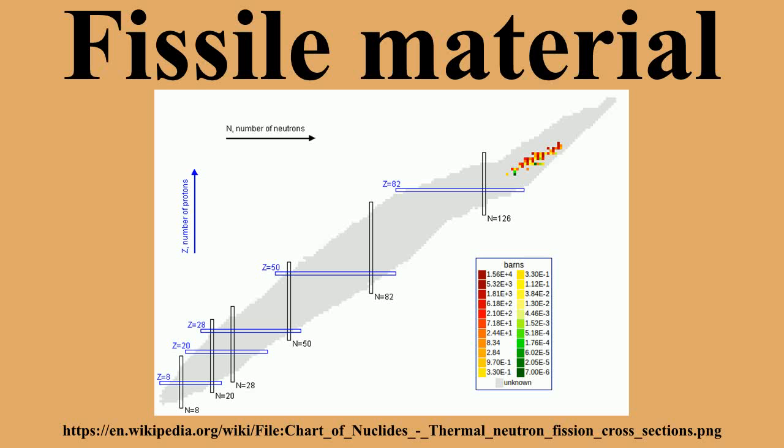By definition, fissile material can sustain a chain reaction with neutrons of any energy. The predominant neutron energy may be typified by either slow neutrons or fast neutrons.